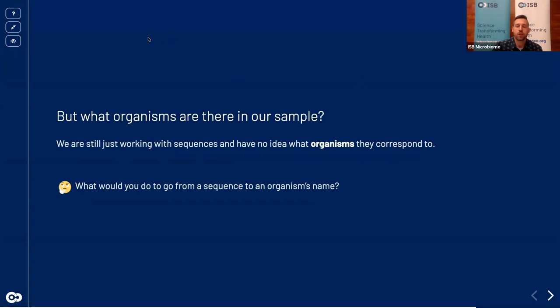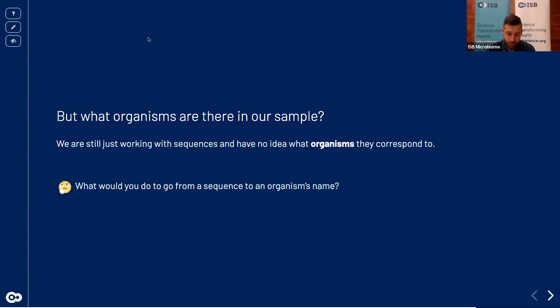Welcome back to the course. Up to this point we've started with our raw sequencing reads, imported them into QIIME 2, denoised them using DADA2 to identify our ASVs, built a phylogenetic tree, and used that to calculate and visualize diversity metrics — both alpha and beta diversity. The last step, which I think is pretty exciting, is what I teased at the end of the last session.